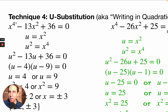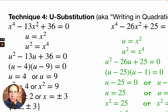Here's what we see: x to the fourth minus 13x squared plus 36 equals 0. The indicators I'm looking at are that this kind of looks like something you could apply to the quadratic formula or split-the-middle from chapter 3, except the exponents are twice as high as I'm expecting. So I'm going to let u equal x squared, because I see an x squared here. And if I square both sides, I get u squared equals x to the fourth.